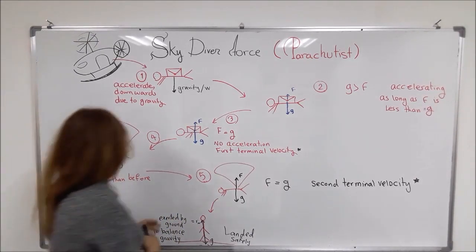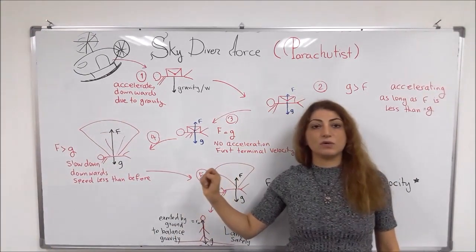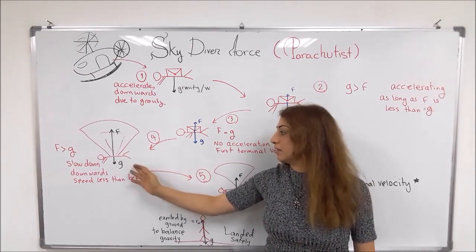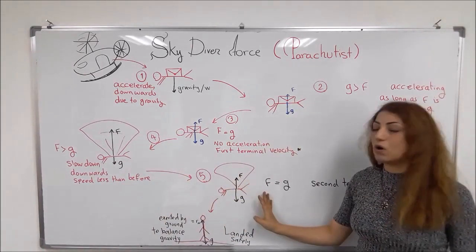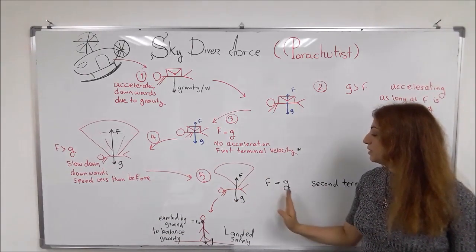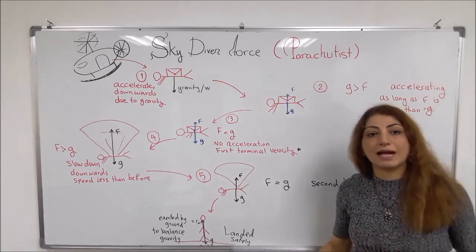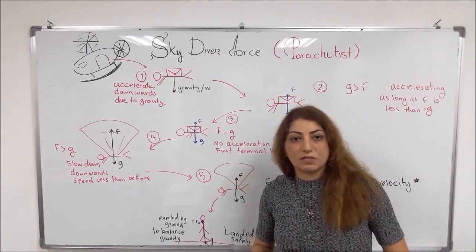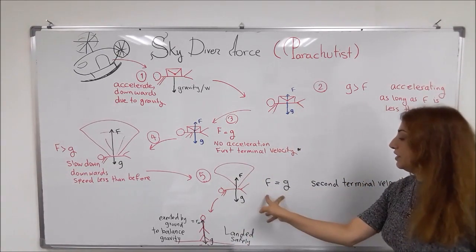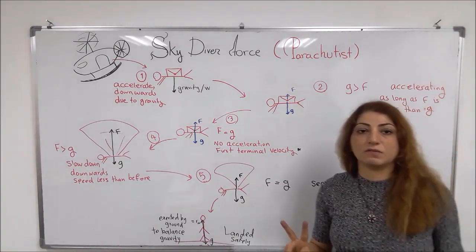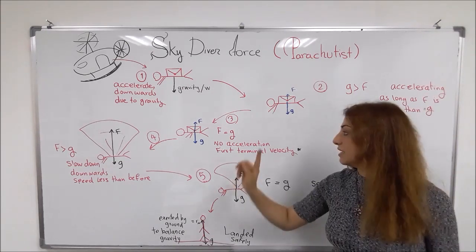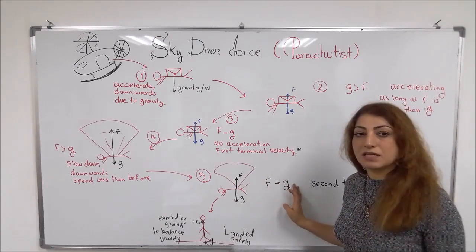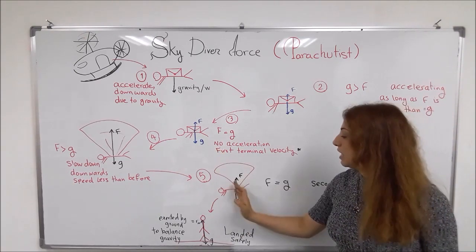When the person opens the parachute, it slowly slows down — deceleration occurs. At the beginning, the force of friction becomes very high compared to gravity, but gradually they become equal again in size. So again we reach a point where friction and gravity are equal, meaning no more acceleration. The person moves downward to the ground with constant speed again — this is the second terminal velocity, which is much less than the first terminal velocity.